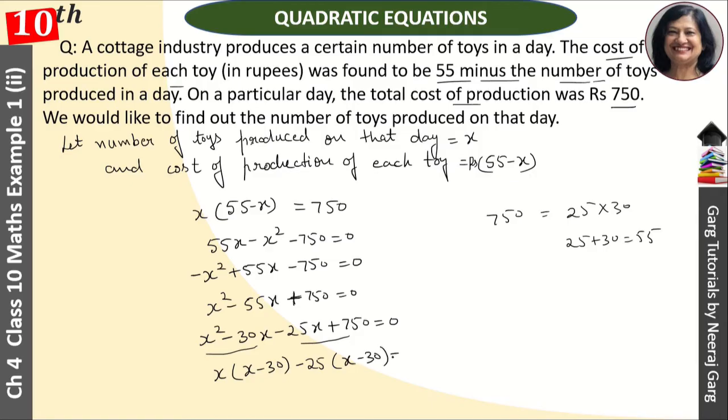So here will be x minus 30, and in these two, common is minus 25, and here will be x minus 30, that is equal to 0.